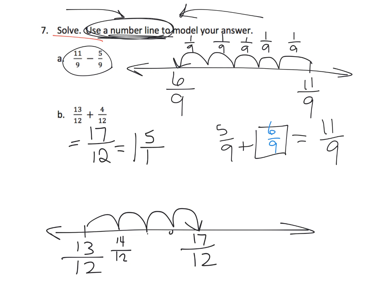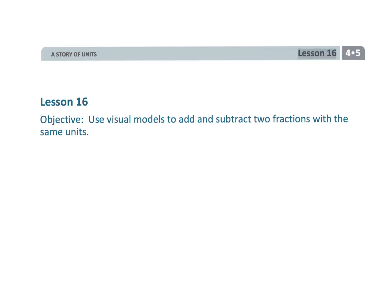Seventeen-twelfths equals one and five-twelfths. Parents and teachers, at this point you might want to see if students can convert to a mixed number in their head without decomposing — that's a fun challenge for them. That wraps up fourth grade module 5 lesson 16, where we use visual models to add and subtract fractions.